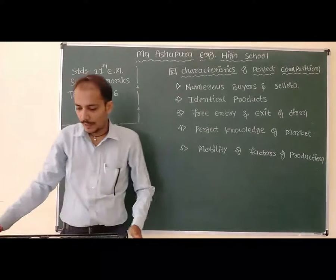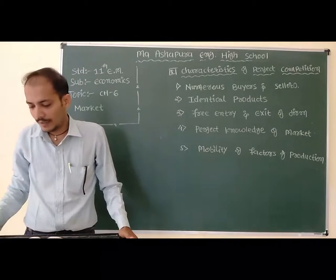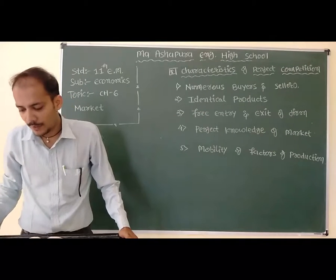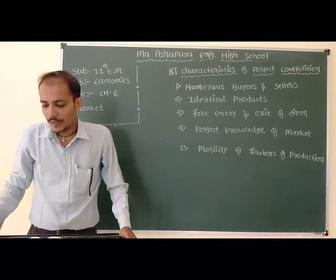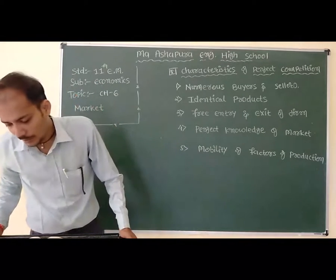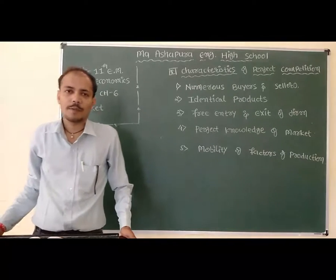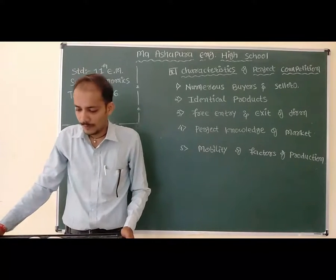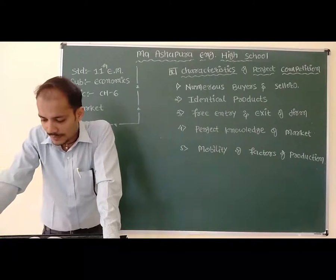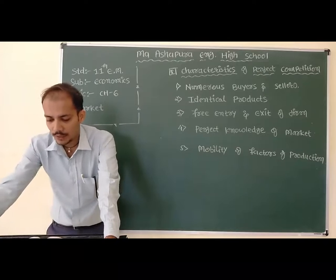Point number 4: Perfect knowledge of the market. The producer, buyer, and seller have complete knowledge of the market, including product availability and product price. The producer or seller is also aware of the price at which other producers and sellers are selling the product.